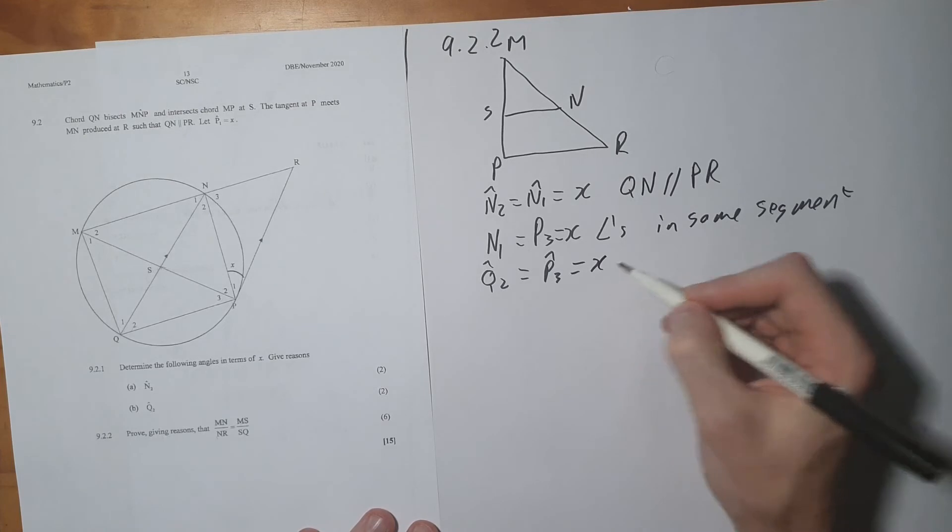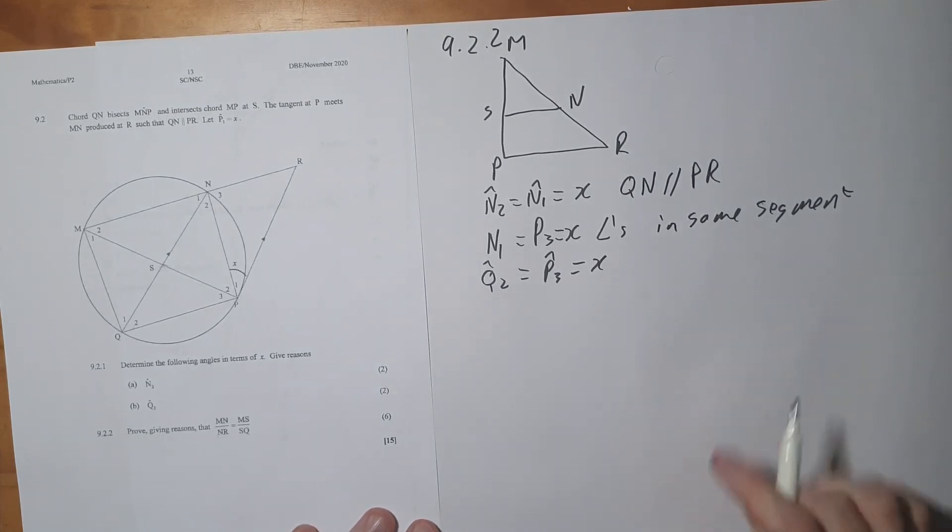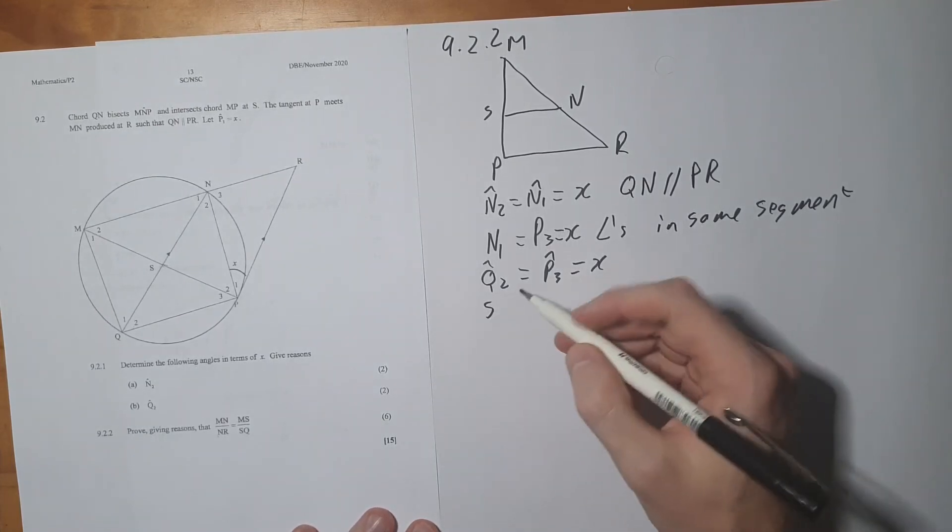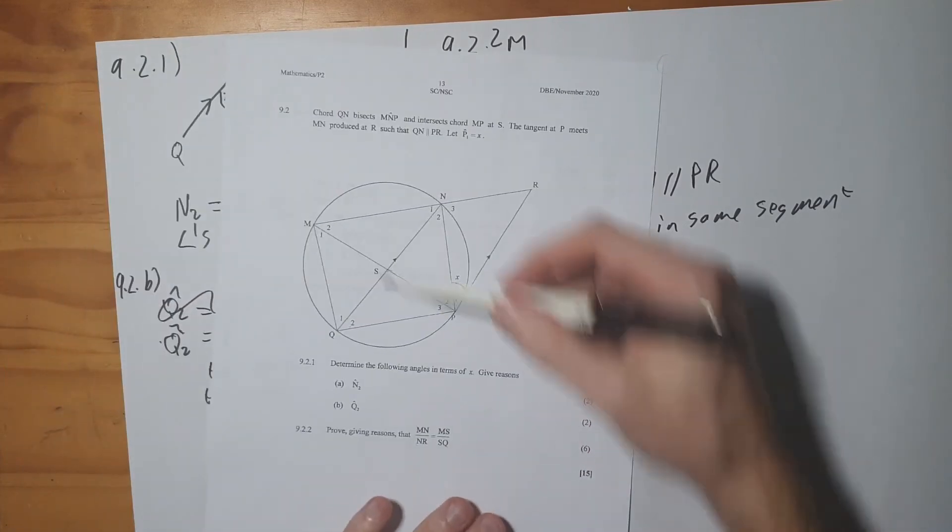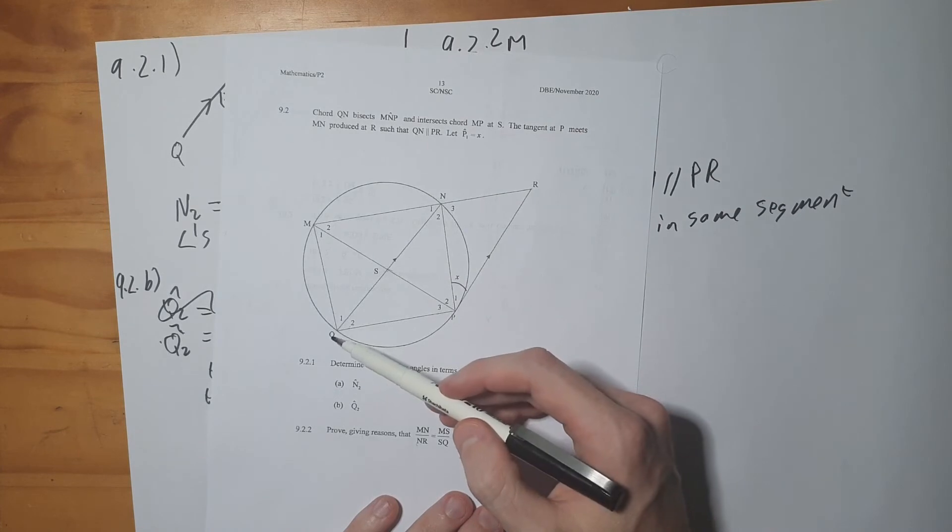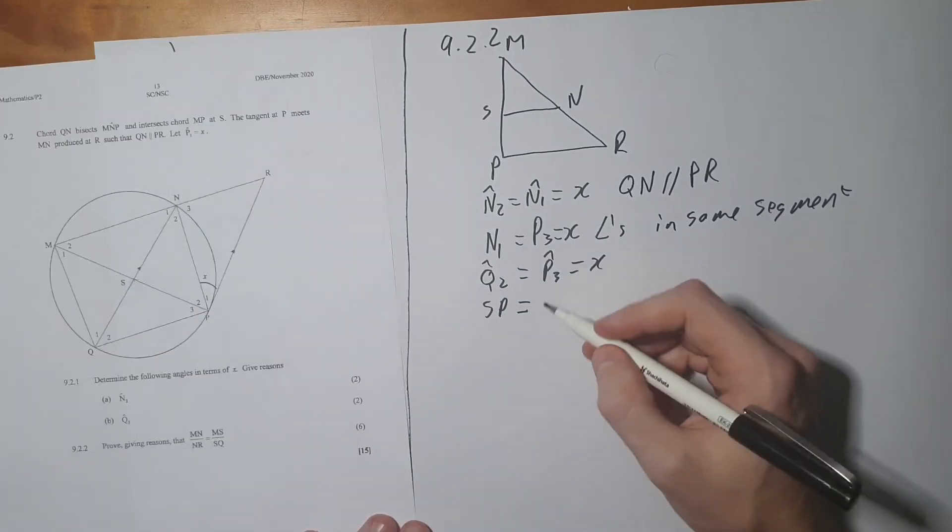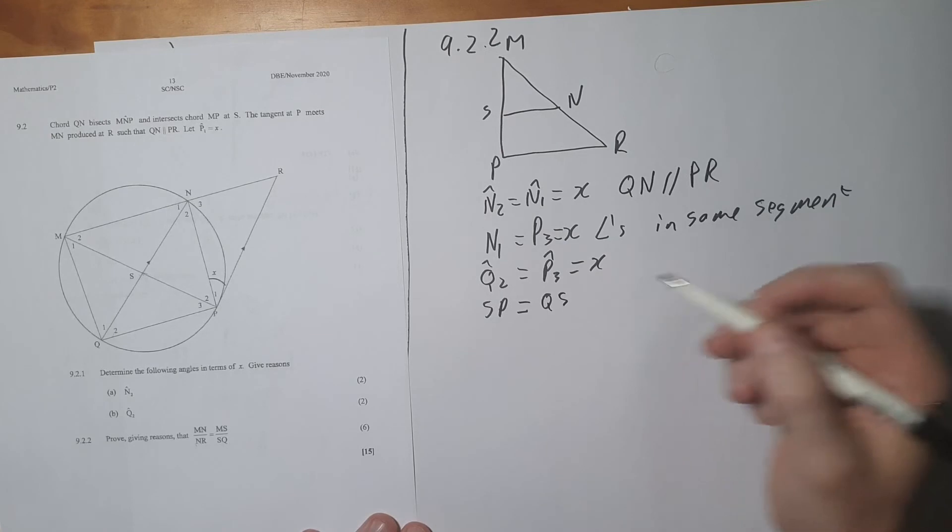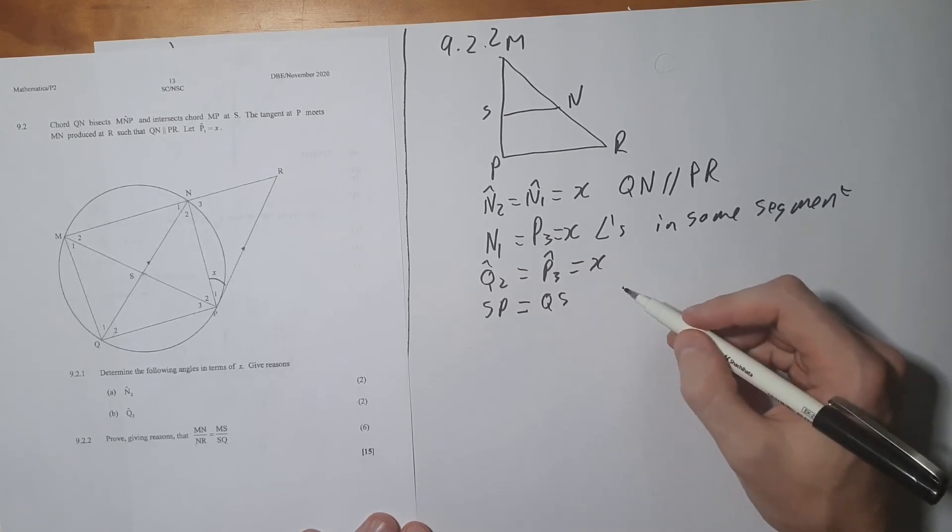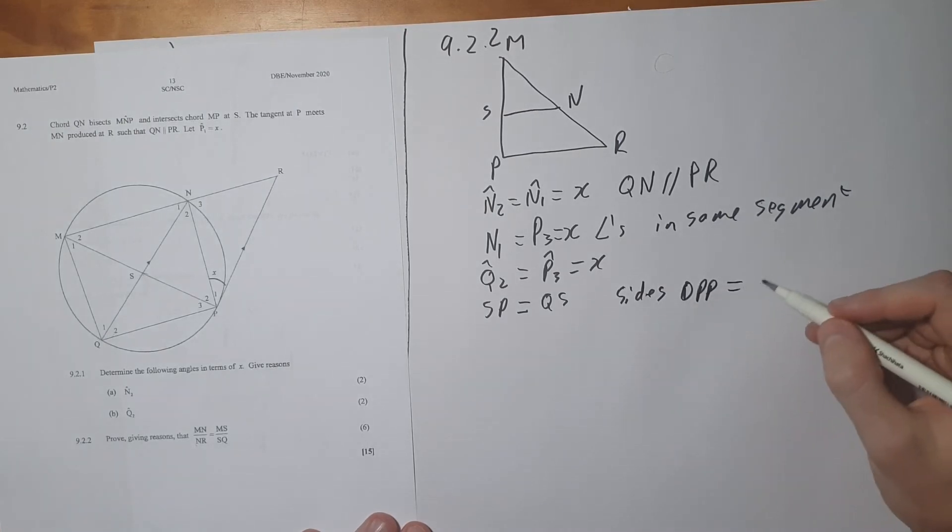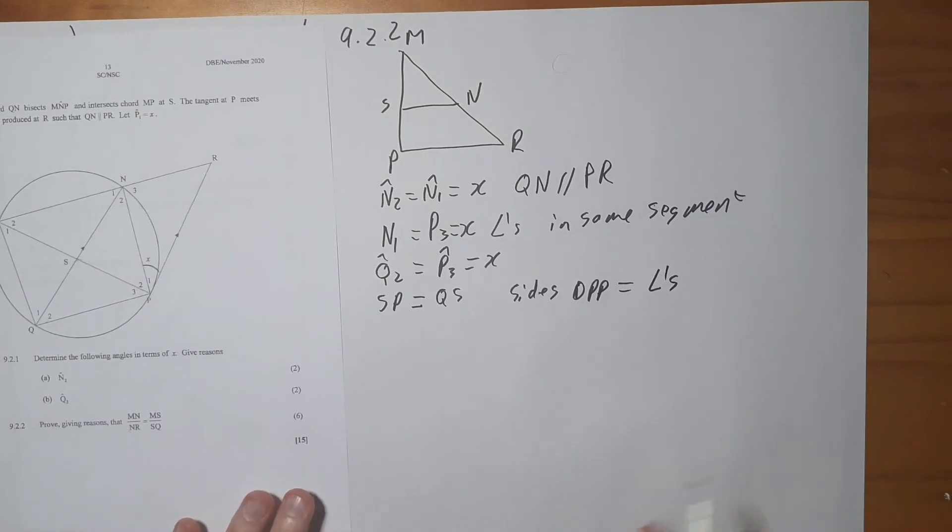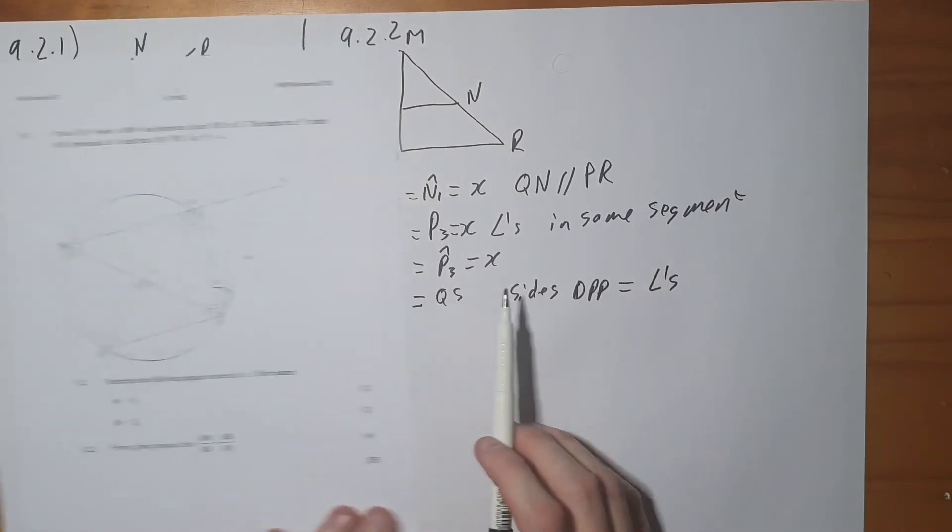Now we have that Q2 equals to P3, since they both are equivalent to X. Therefore I can state that SP is going to then be equal to QS, because of sides opposite equal angles. So I have proven that SP is equal to QS.